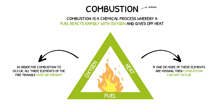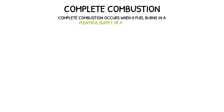When fuels such as alkanes burn during combustion reactions, they release useful energy. Therefore combustion is a type of exothermic reaction. There are two types of combustion reaction that may occur. The first of these is a complete combustion reaction. Complete combustion occurs when a fuel burns in a plentiful supply of oxygen. The products of the reaction are carbon dioxide gas and water vapour.